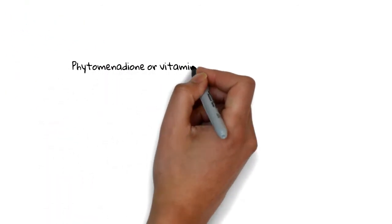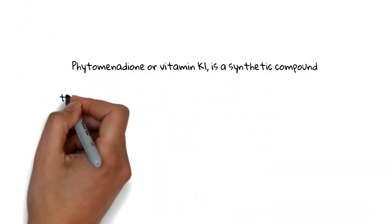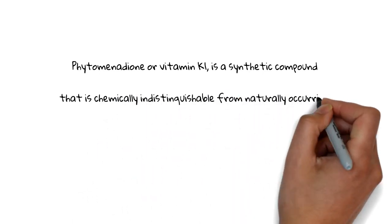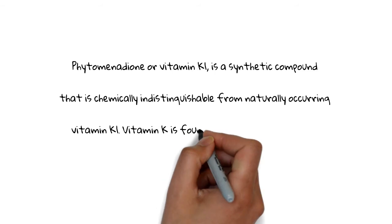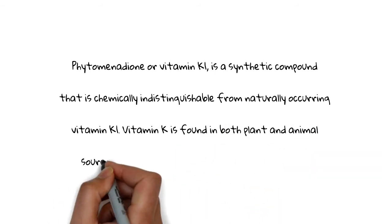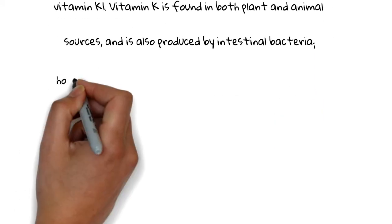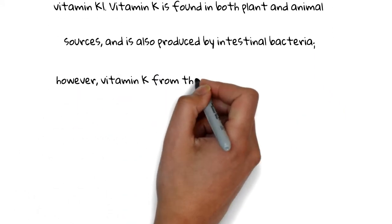Phytomenadione or vitamin K1 is a synthetic compound that is chemically indistinguishable from naturally occurring vitamin K1. Vitamin K is found in both plant and animal sources and is also produced by the intestinal bacteria. However, vitamin K from these different sources is not identical.